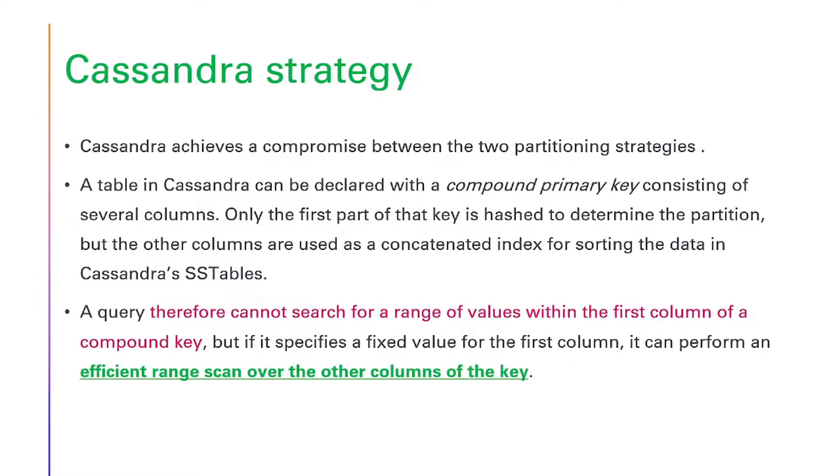Cassandra strategy. Cassandra achieves a compromise between two partitioning strategies. A table in Cassandra can be declared with a compound primary key consisting of several columns. Only the first part of the key is hashed to determine the partition, but the other columns are used as concatenated index for sorting the data in Cassandra's SSD tables. A query cannot search for a range of values within the first column of a compound key, but if it specifies a fixed value for the first column, it can perform an efficient range scan over the other columns of the key.